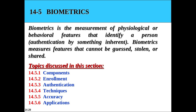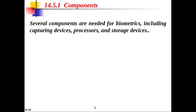In this section we will discuss components, enrollment, authentication techniques, accuracy, and applications. Several components are needed for biometrics, including capturing devices, processors, and storage devices. Capturing devices such as readers or sensors measure biometric features. Processors convert the measured features into data appropriate for saving. Storage devices save the result of processing for later authentication.